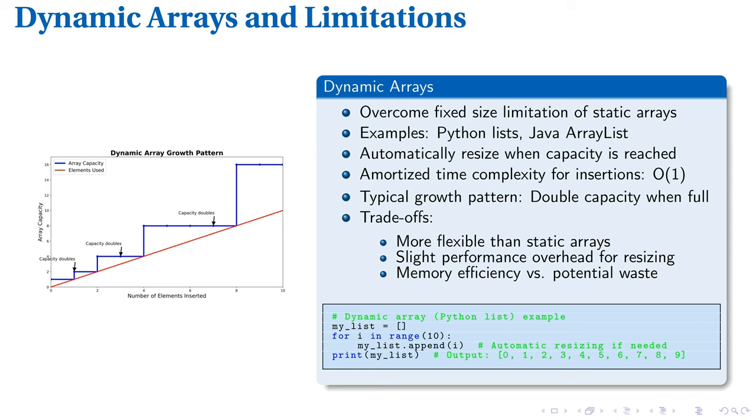The Python example on the slide demonstrates this concept. Starting with an empty list, we append numbers 0 to 9. Behind the scenes, automatic resizing occurs as needed, resulting in the final list: 0, 1, 2, 3, 4, 5, 6, 7, 8, 9. This showcases how dynamic arrays adapt to growing data requirements, providing an efficient compromise between the rigidity of static arrays and the need for flexible data storage.